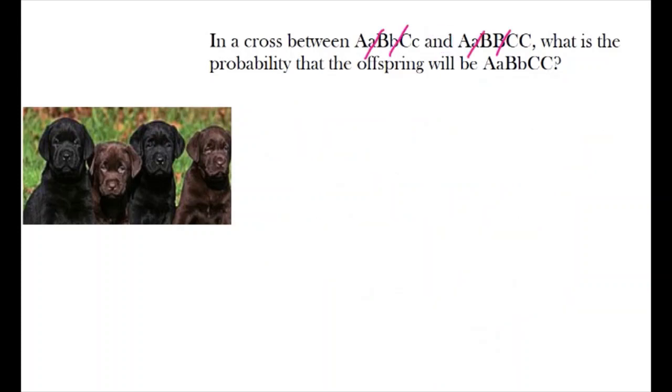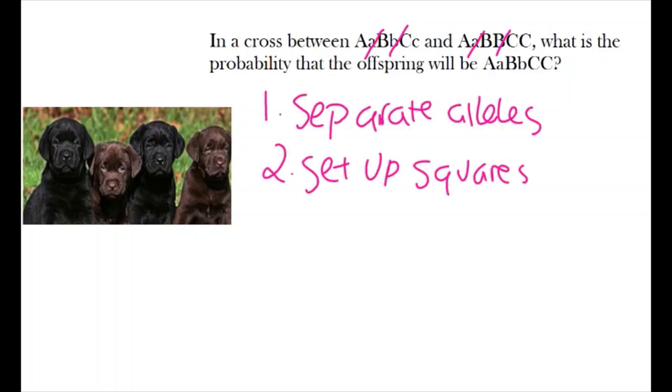To solve this problem, we are going to separate each parent's genotype into their separate alleles that code for the same trait. Then we will set up separate Punnett squares for each trait, and then after solving each probability, multiplying them together.